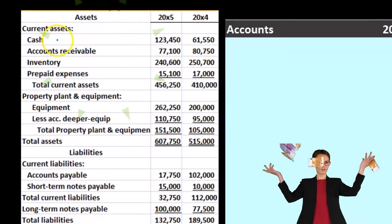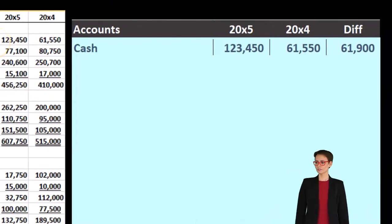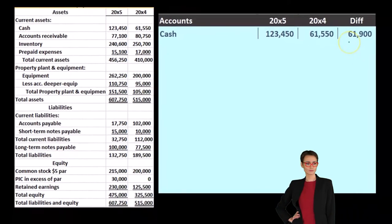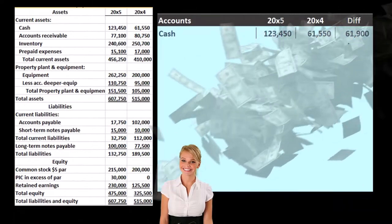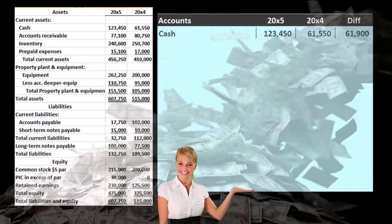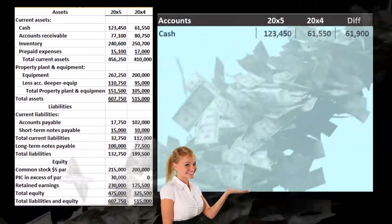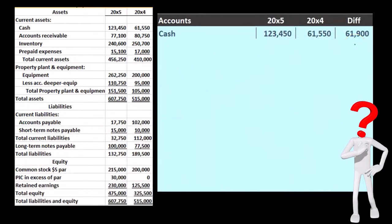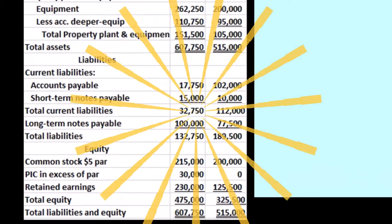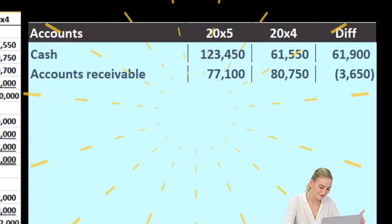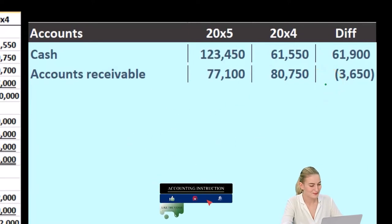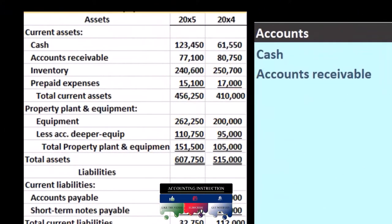We'll start with the account of cash: 2000x5 is $123,450 and 2000x4 is $61,550. We subtract those to get the difference — the change — of $61,900. The change is an increase. As we go to debits and credits, we need to interpret the change: the prior number goes to the current number, so it went up. Then accounts receivable: $77,000 versus $180,000 — wait, $77,100 and $80,750 for x5 and x4. When subtracted, the difference is $3,650 — a decrease in this account.